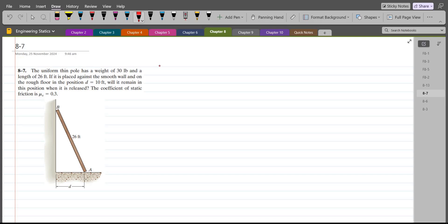That is, if the pole has to remain stationary, it means no slipping. Then, the pole has to satisfy this condition.